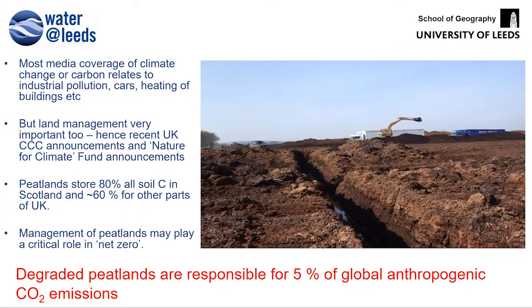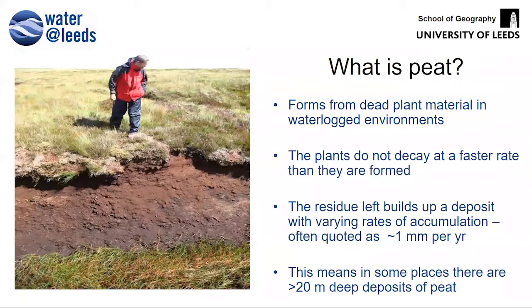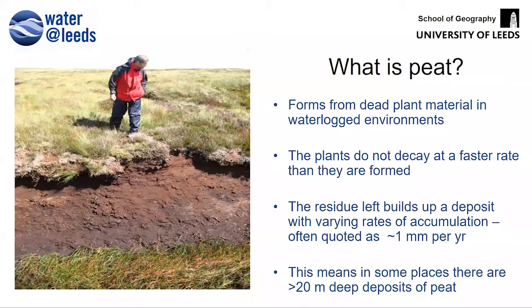The photograph on screen is a peat extraction site near Manchester. We're using peat to power power stations in some countries and in horticulture — you can buy peat in garden centers as compost. This is one of the key issues: we're taking peat out of the landscape, releasing carbon back to the atmosphere through peatland degradation. Peat is simply dead plant material — plants grow, sequester carbon through photosynthesis, but because these environments are wet the plants don't fully decay when they die.